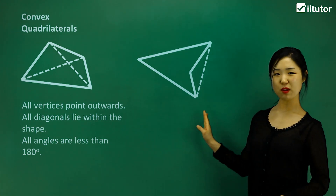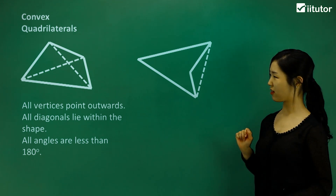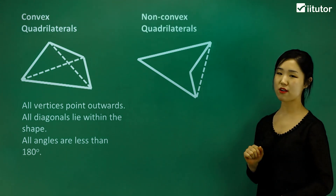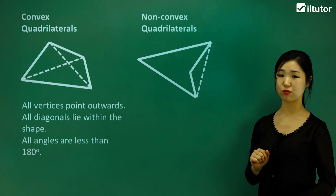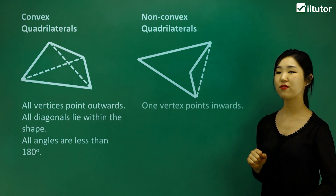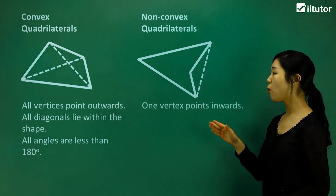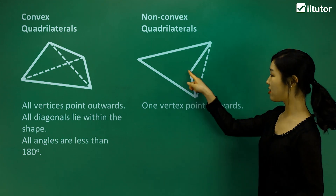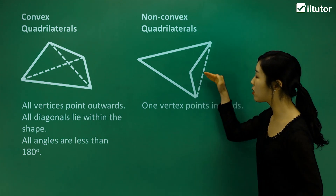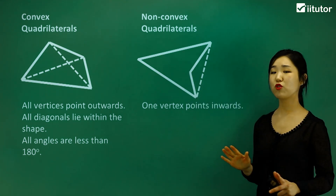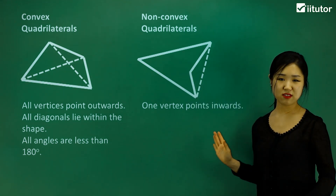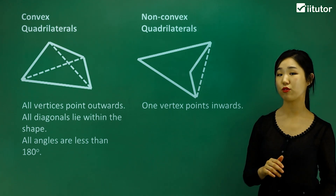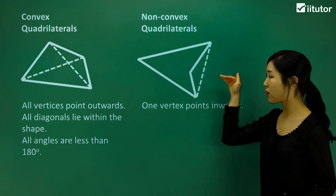This next shape looks a little bit different. This one is what we call a non-convex quadrilateral. The reason why is because, firstly, one vertex points inwards. You can see this vertex is going towards the inside of the shape, which is one of the key factors of a non-convex quadrilateral.